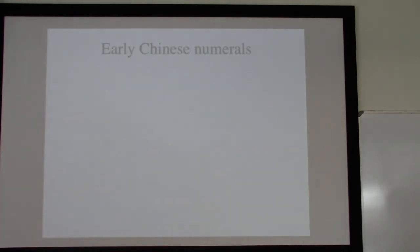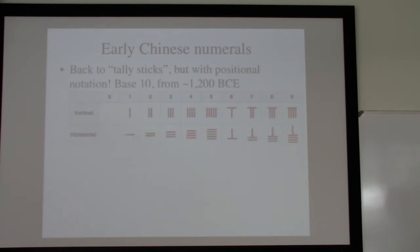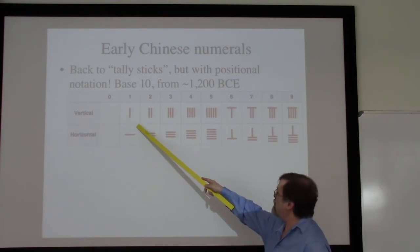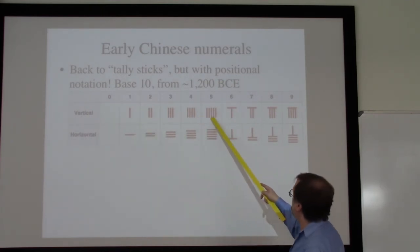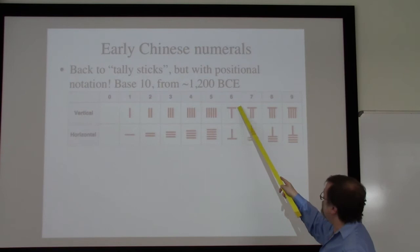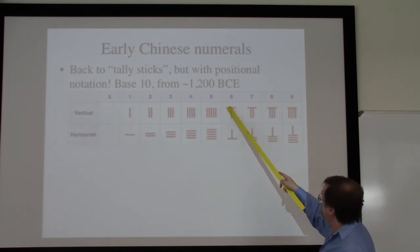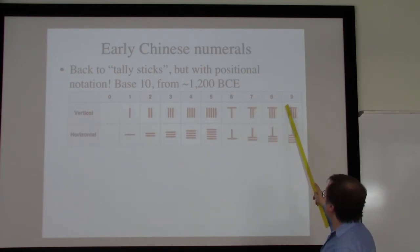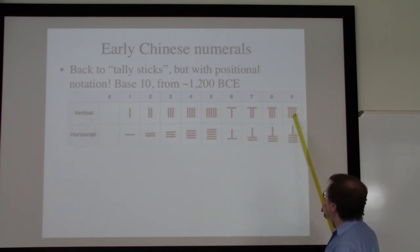Let's switch over now to the Chinese number systems. We're going back essentially to tally sticks, and this dates from about 1200 BCE, done in base 10, and here we do really have positional notation. Here are the basic numbers 1 through 5. But as soon as we get above 5, we do a grouping — if these are vertical lines, then a horizontal line represents 5. So this becomes 5 and 1 for 6, 5 and 2 for 7, and 5 and 4 for 9.